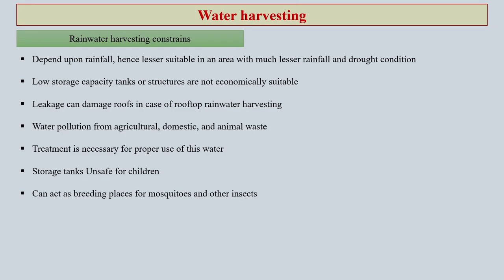I earlier talked about water harvesting, including roof water harvesting and why it is important even in areas with good rainfall. Now, there are certain constraints that practitioners, administrators, or communities may face in the field. One constraint is rainfall — water harvesting largely depends on the amount and frequency of rainfall.